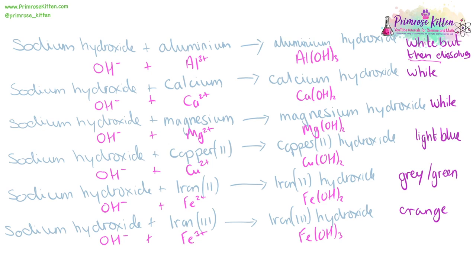Testing for magnesium with sodium hydroxide will give you a white precipitate, so in this circumstance you would need another test to differentiate between calcium and magnesium. Copper ions will give you a light blue precipitate, iron two ions will give you a gray-green precipitate, and iron three ions will give you an orange precipitate.